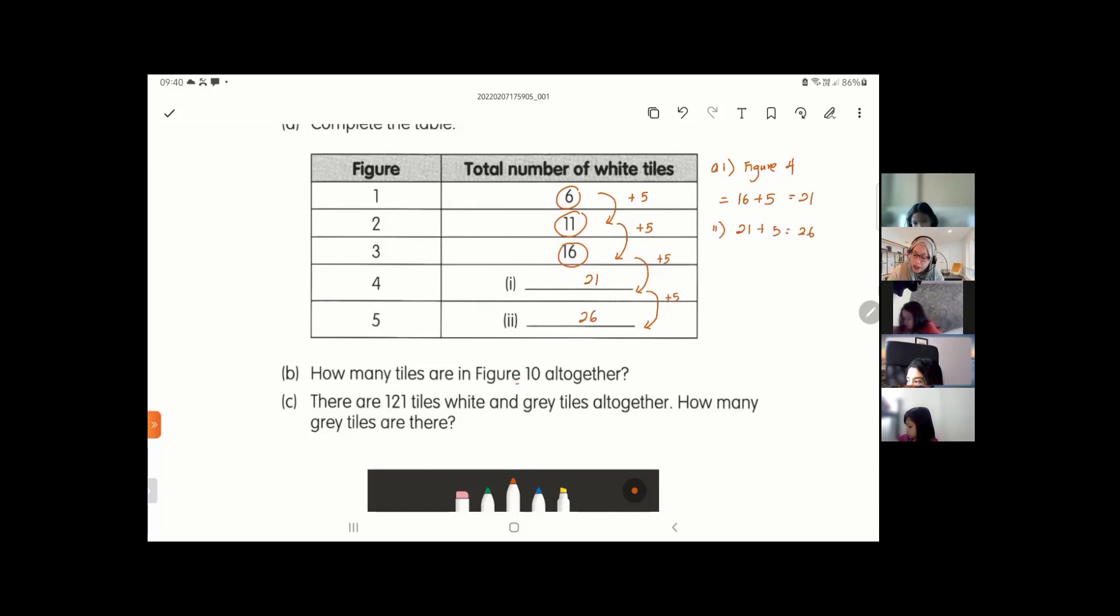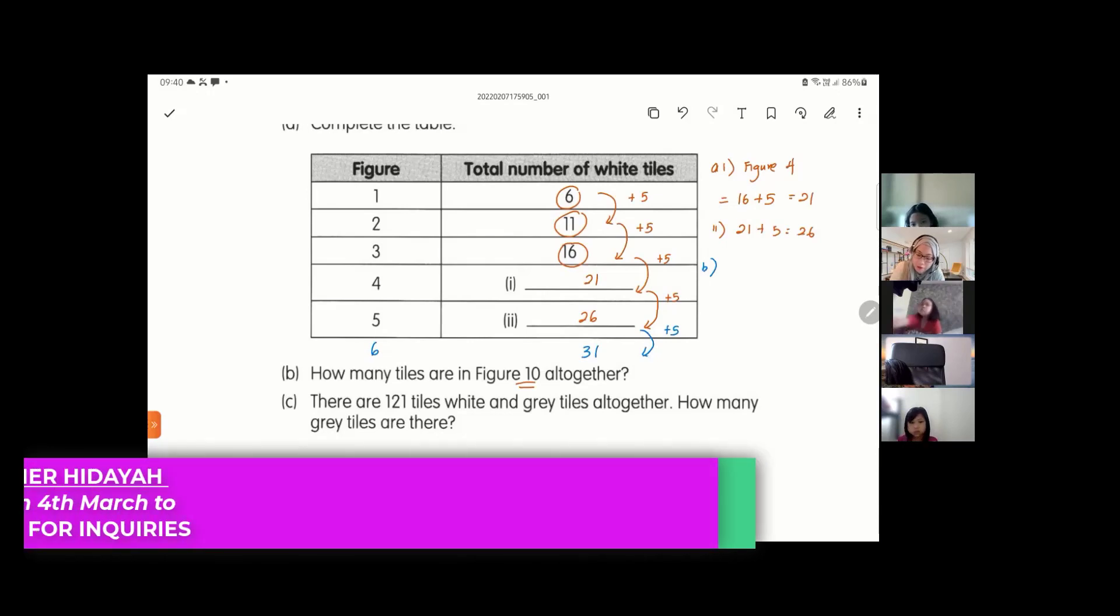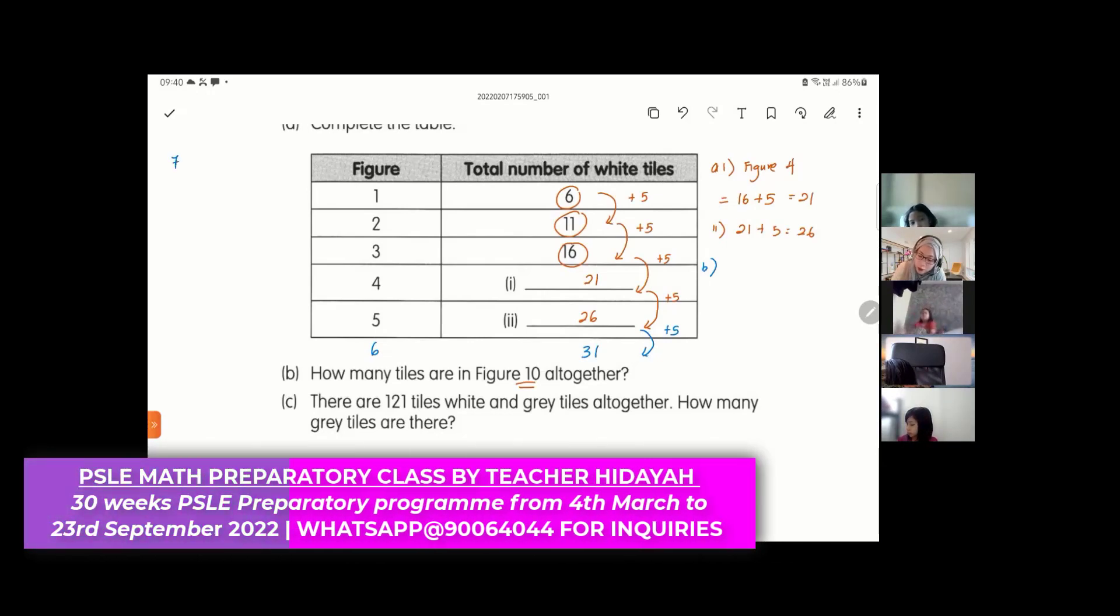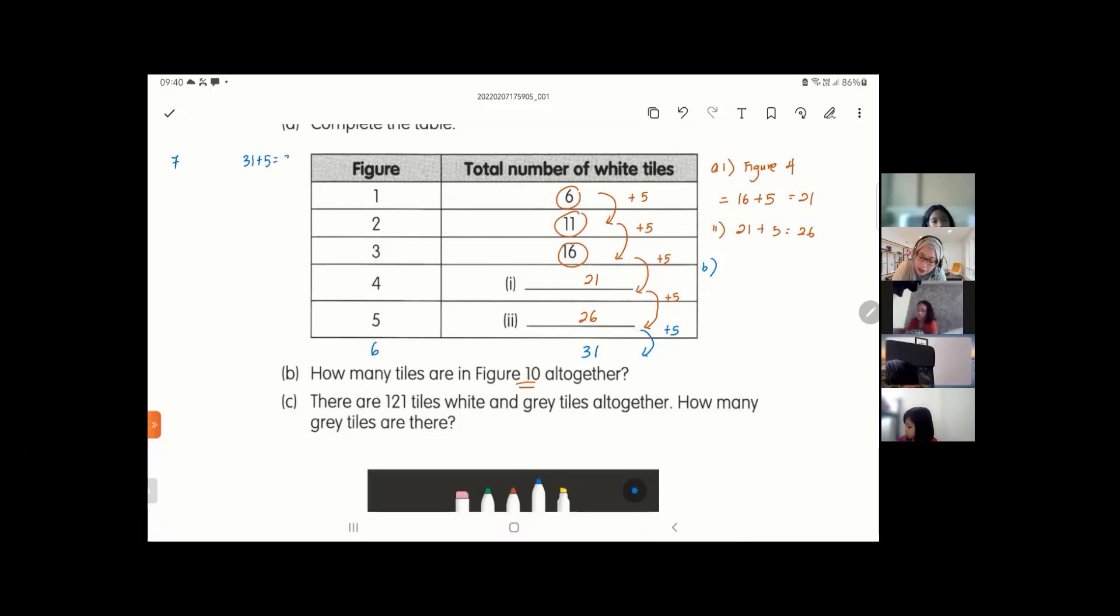How many tiles are there in Figure 10 altogether? For part B, how do we answer this? So for Figure number 10, if you have Figure number 6, you can continue. Figure number 6 will be, you plus 5, so will be 31. Figure number 7, I continue, so 31 plus 5 is 36.